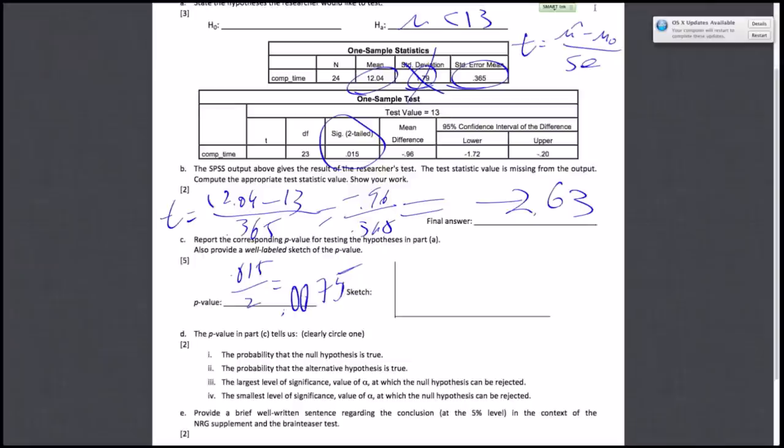The question also asks for a sketch of the p-value. First, label your axes: T and density. Draw the T distribution, which is very similar to a normal distribution. Label it as T with 23 degrees of freedom. You can find the degrees of freedom in the table next to the p-value, DF equals 23. Put 0 at the center of the distribution.